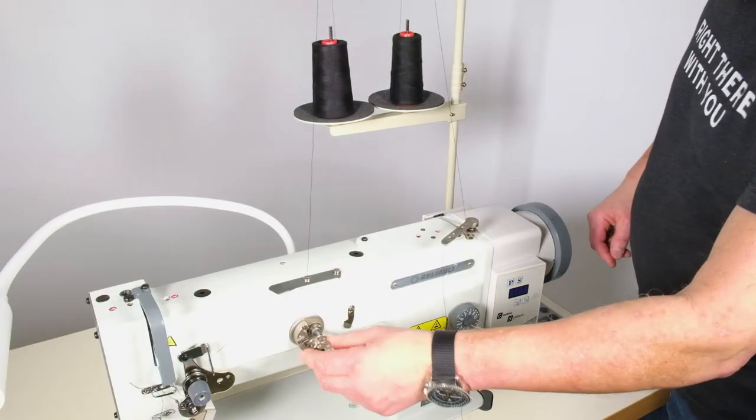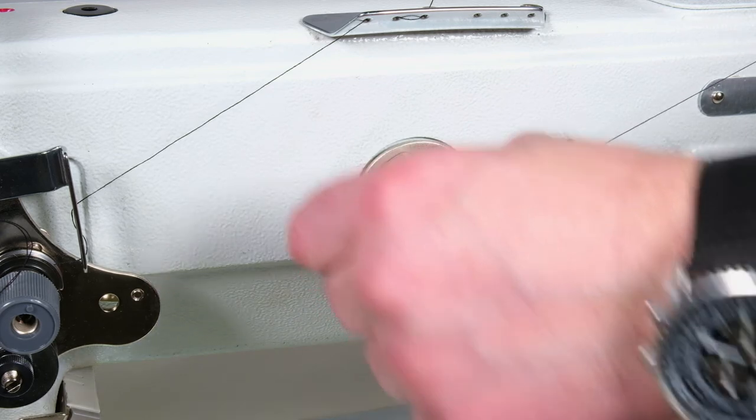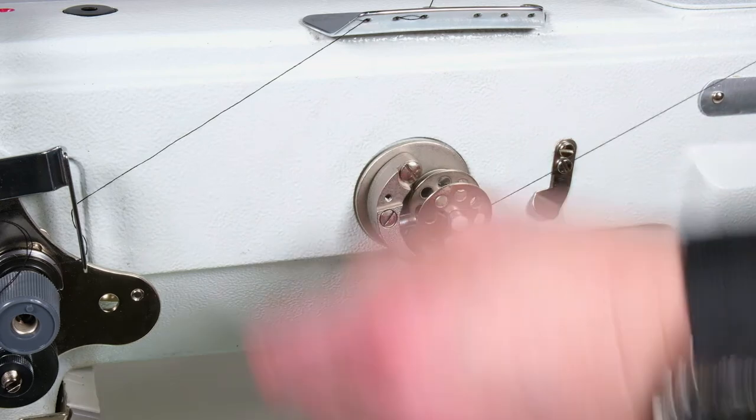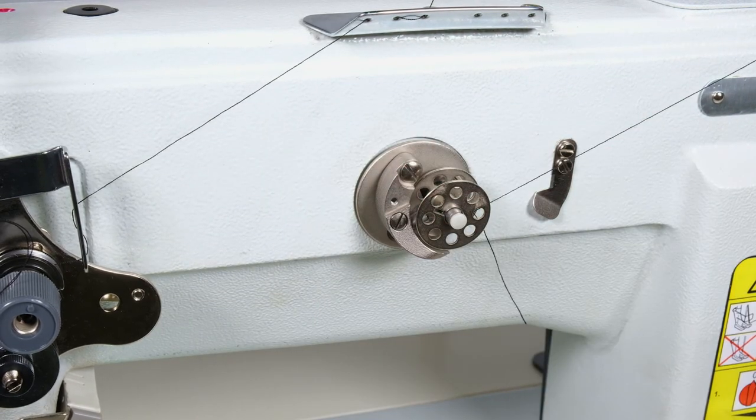Now load the bobbin onto the bobbin winder bringing your thread underneath feeding left to right. Wind the thread around the bobbin, press in the actuator and start to wind your bobbin.